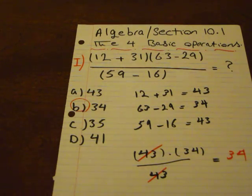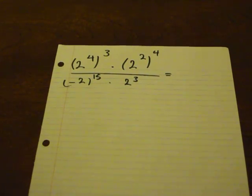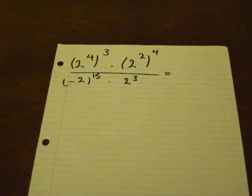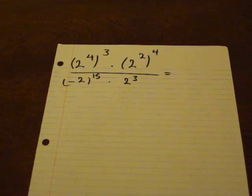The second question we are going to cover today is regarding powers. We have 2 to the power of 4, to the power of 3, times 2 to the power of 2, to the power of 4 — the whole thing divided by negative 2 to the power of 15 times 2 to the power of 3.